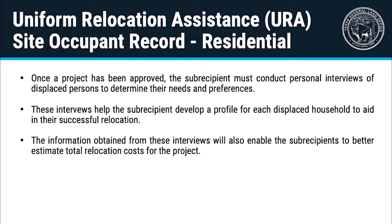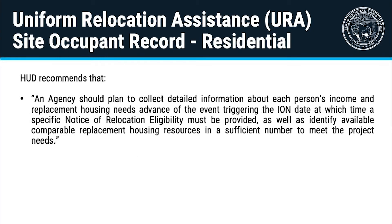Once the project has been approved, the subrecipient must conduct personal interviews of displaced persons to determine their needs and preferences. These interviews help the subrecipient develop a profile for each displaced household to aid in their successful relocation. The information obtained from these interviews will also enable the subrecipient to better estimate total relocation costs for the project. HUD recommends that an agency should plan to collect detailed information about each person's income and replacement housing needs in advance of the event triggering the initiation of negotiations, or ION date, at which time a specific notice of relocation eligibility must be provided, as well as identifying available comparable replacement housing resources in a sufficient number to meet the project needs.